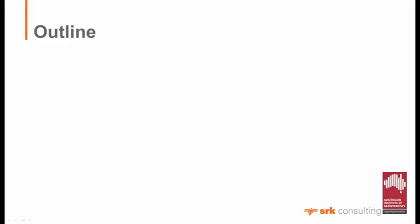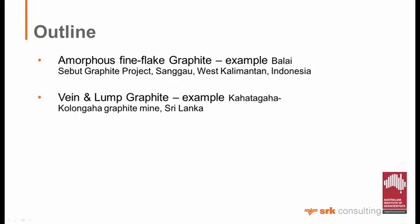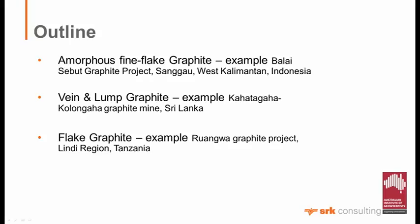The outline: I wanted to look at the three main types of natural graphite and give examples of each of the projects I've worked on. The first is amorphous fine flake graphite in Kalimantan. Then I'll do a brief overview of vein and lump graphite from Sri Lanka - I'll just discuss my experience going down the government mine, Kataga Kalunga. And finally, a little about a flake graphite project I'm currently working on in the Lindi region of Tanzania, plus some concluding thoughts.